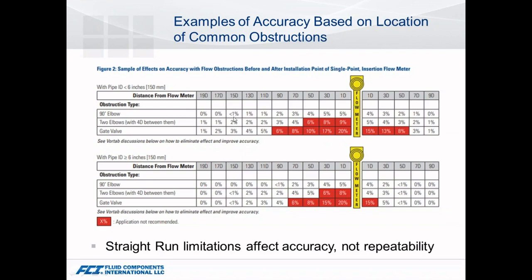One area you can look at is: what is the obstruction, how many diameters is it from my meter location, and what impact does it have on accuracy? Looking at this chart — elbows up and down, two elbows in series, a gate valve — the red doesn't indicate a bad application; the red just indicates an inaccuracy greater than 5%. So evaluating impact on straight run, the number one question is: what accuracy are you trying to achieve, and what kind of solutions do we take to get there? Before you can take that next step, you really have to understand what inaccuracies are being introduced.